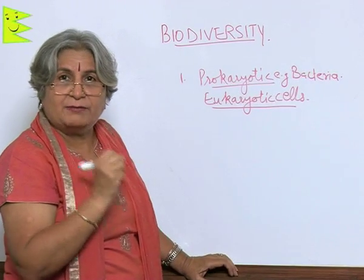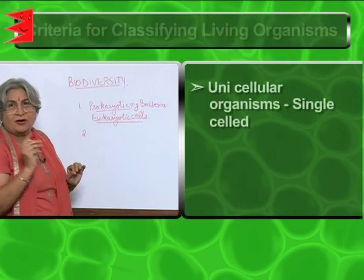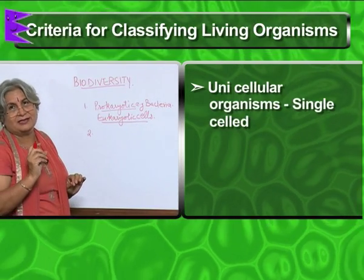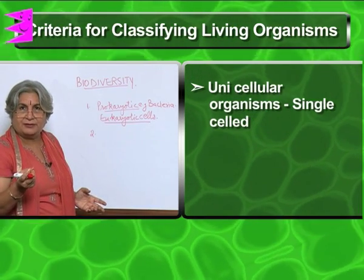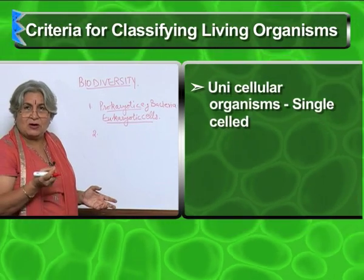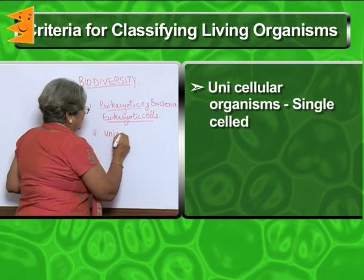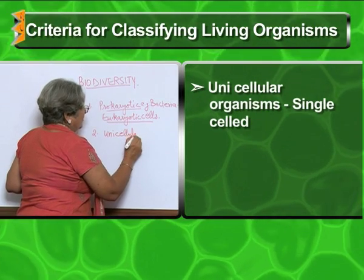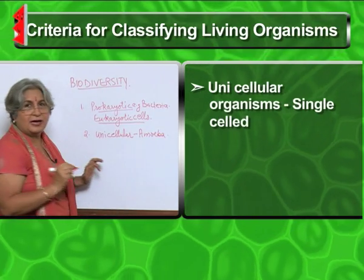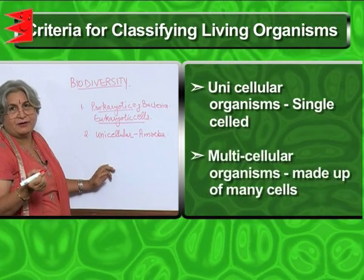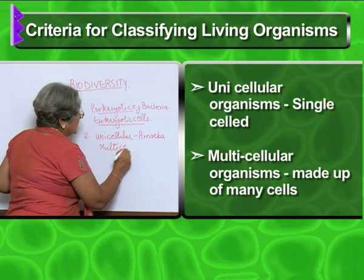Then we can come to the number of cells. That means if an organism is made up of only one cell, then it is called unicellular — like amoeba, paramecium, plasmodium, chlamydomonas — all these organisms are unicellular. But in the case of other organisms, they are made up of many cells, so they are multicellular.